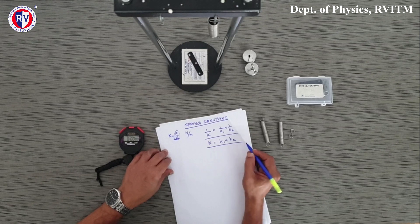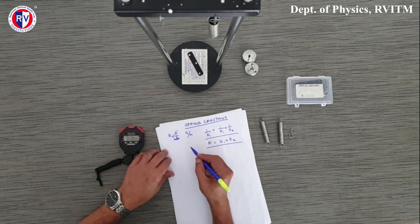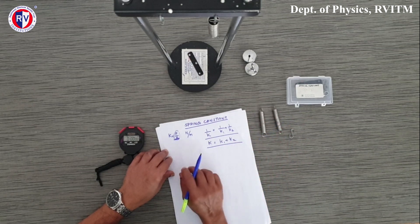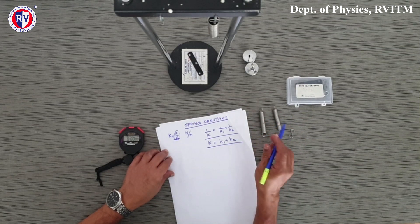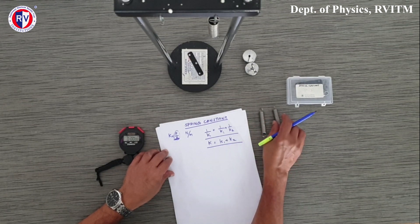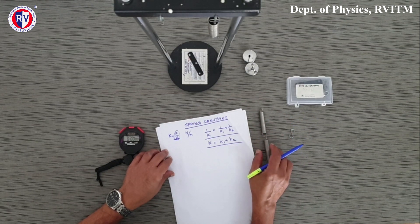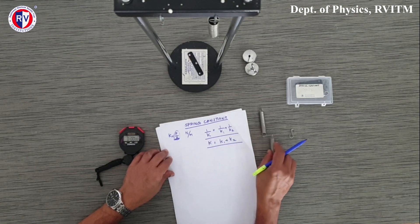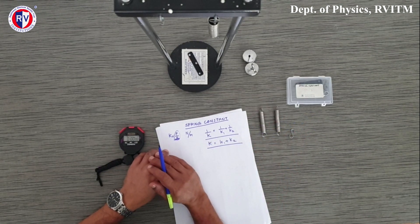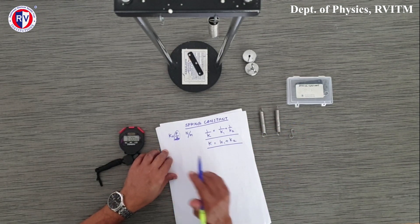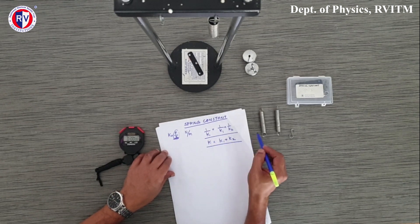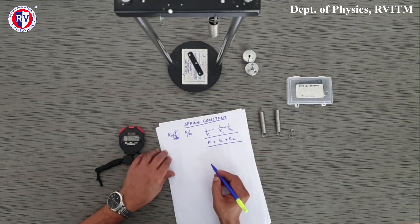So this law we will have to verify. We will be finding out the spring constants of two springs individually. And also we will put them in series, find out the spring constant, connect them in parallel, and again find out the spring constant. Using these equations we will verify the laws of springs.